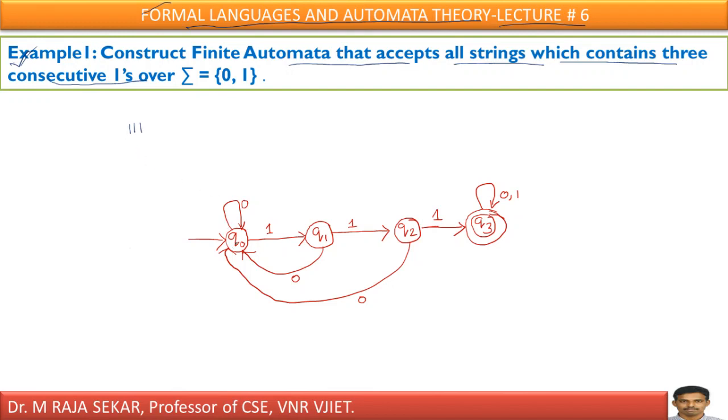Let me say q0 is my initial state. There is no restriction on zeros, therefore I am keeping a self loop. As I need 3 consecutive 1s, just q0 and 1, I am going to q1.